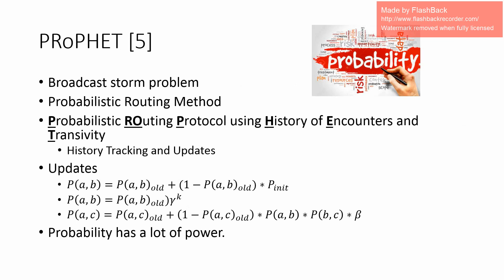Another routing protocol that can improve upon broadcasting uses probability. This method is called Probabilistic Routing Protocol Using History of Encounters and Transitivity, or PRoPHET. The protocol keeps track of nodes meeting other nodes and their chances of meeting again. There are three types of updates: if node A does not meet node B within a certain time, the first probability is applied; if node A meets node B within a certain time frame, the second update is used; and if node A meets node B and node B meets node C, the transitivity property is used to determine if node A will meet node C.